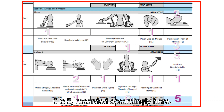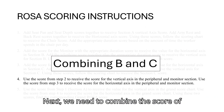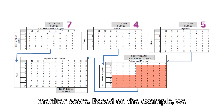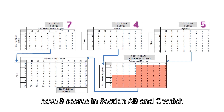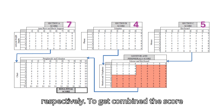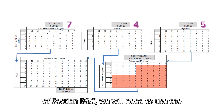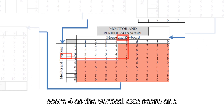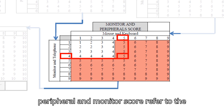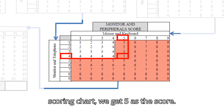Next, we combine the scores from Sections B and C into a peripheral and monitor score. In our example, we have Section A = 7, Section B = 4, and Section C = 5. To combine Sections B and C, we use the Section B score of 4 as the vertical axis and the Section C score of 5 as the horizontal axis on the peripheral and monitor scoring chart, giving a combined score of 5.